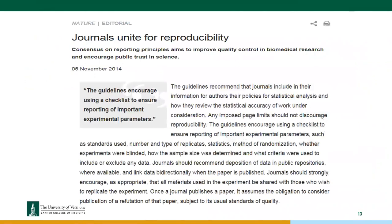Journals are uniting for reproducibility. A 2014 Nature editorial proposed guidelines encouraging journals to use a checklist to ensure reporting of important experimental parameters.